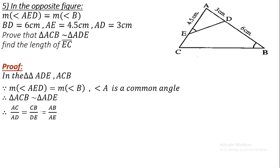The sides are proportional, so we substitute: AC over AD equals CB over DE. AD equals 3 centimeters, AC over 3 equals CB over DE. Also AB equals AD plus DB equals 3 plus 6 equals 9 centimeters. We use cross multiplication to find the unknown lengths.